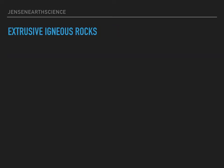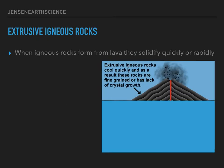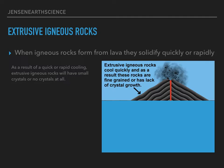Extrusive igneous rocks: when lava is cooling and solidifying it creates an extrusive igneous rock. When igneous rocks form from lava they solidify quickly or rapidly. Extrusive igneous rocks cool quickly and as a result these rocks are fine-grained or have a lack of crystal growth. As a result of quick or rapid cooling, extrusive igneous rocks will have small crystals or no crystals at all.